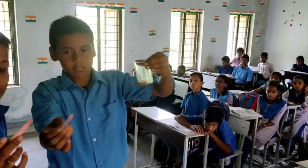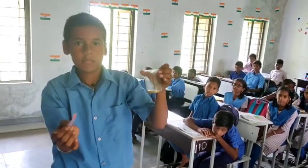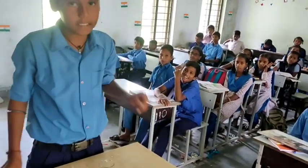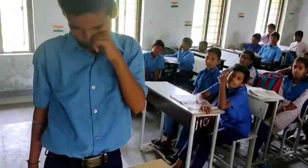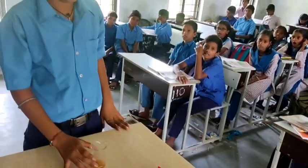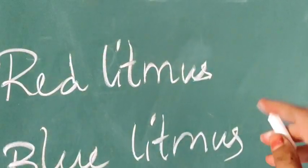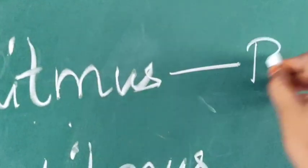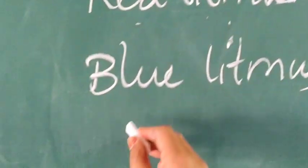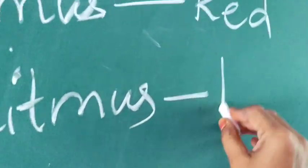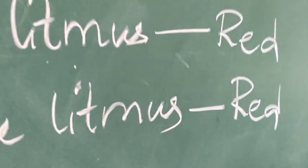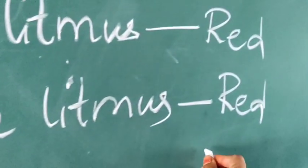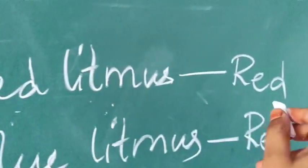The Red Litmus is showing red color and the Blue Litmus is changing into red color when tested with Tomato Juice. So we can conclude that Acids change Blue Litmus to red in color, while Red Litmus remains red in color.